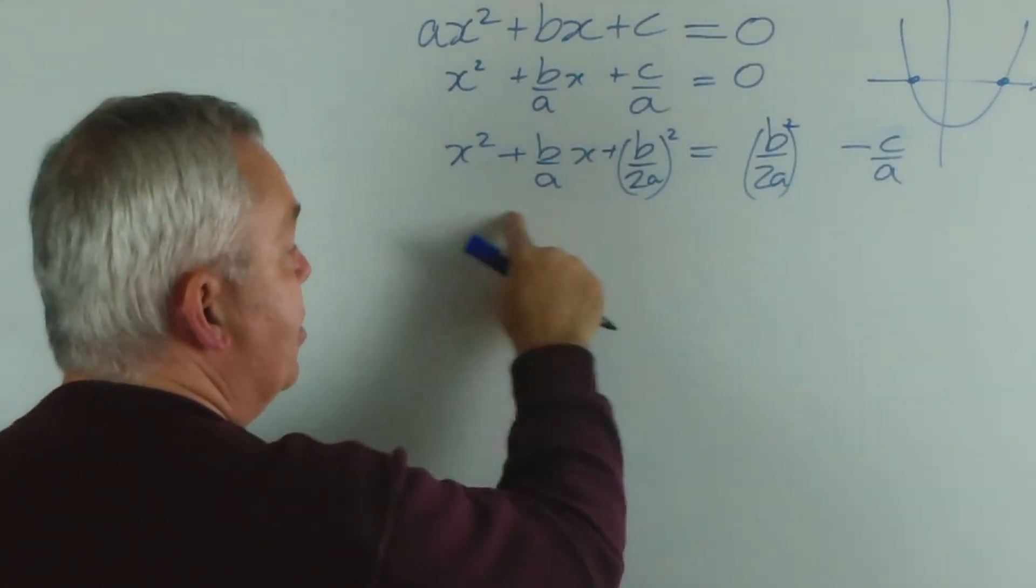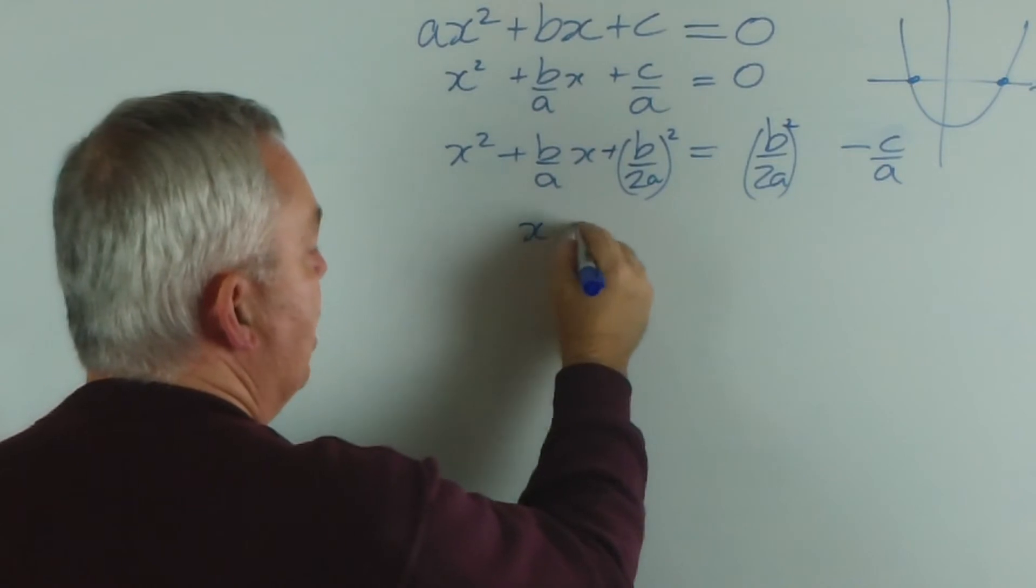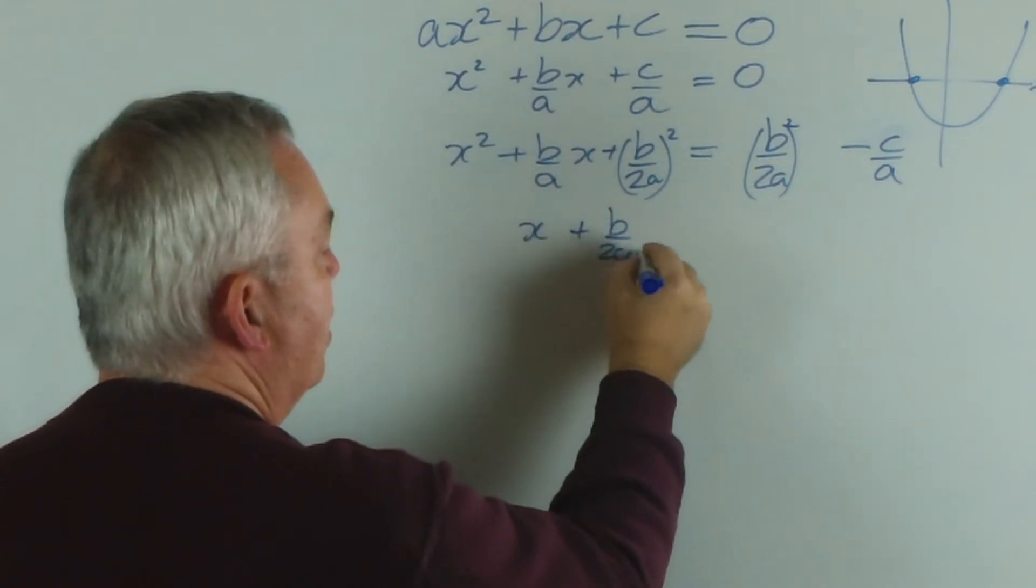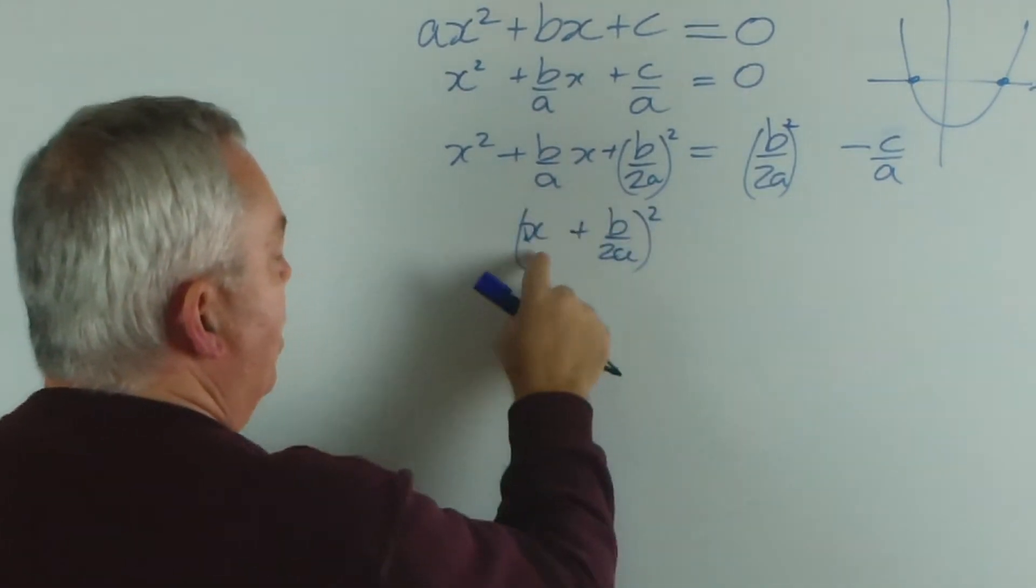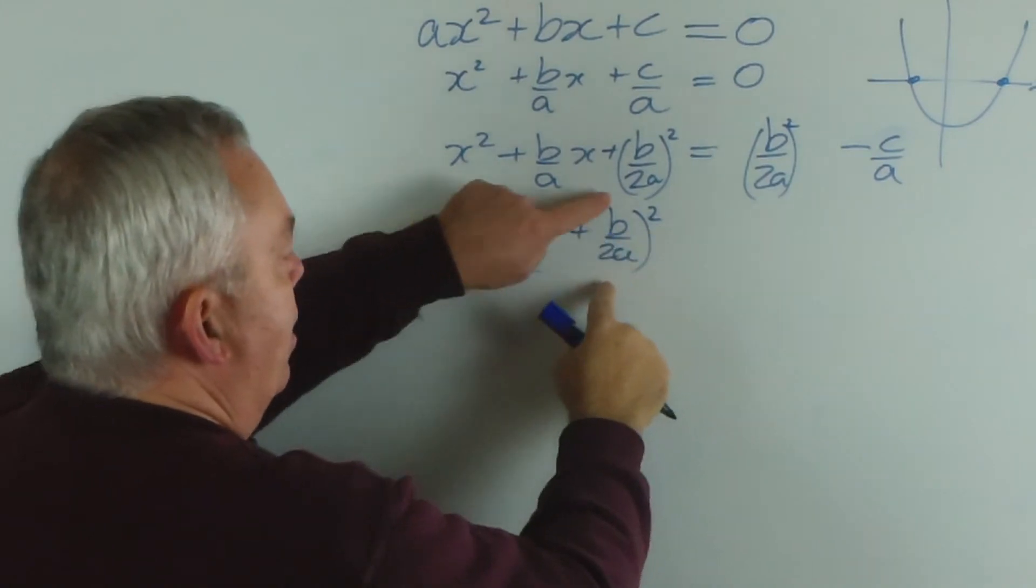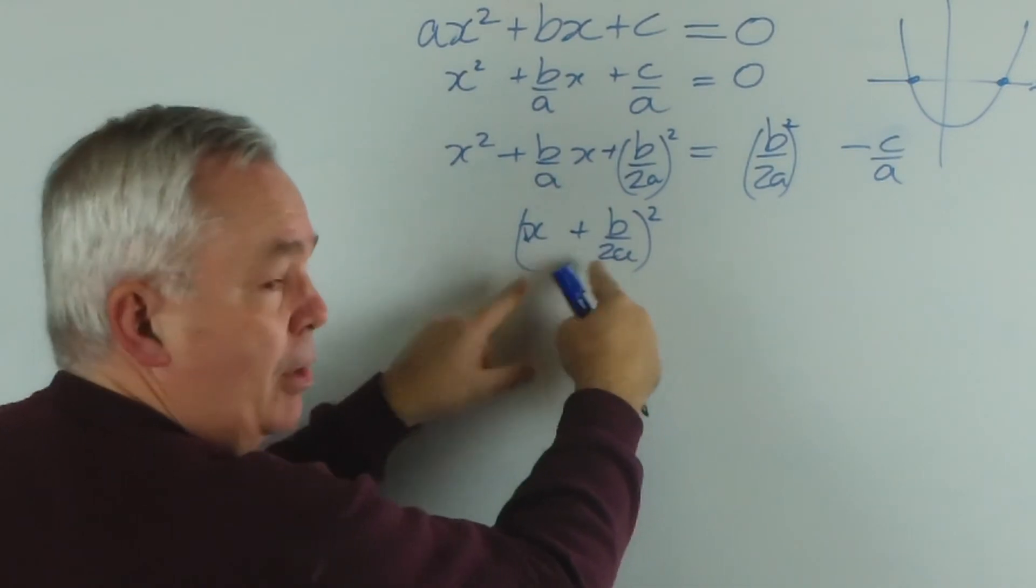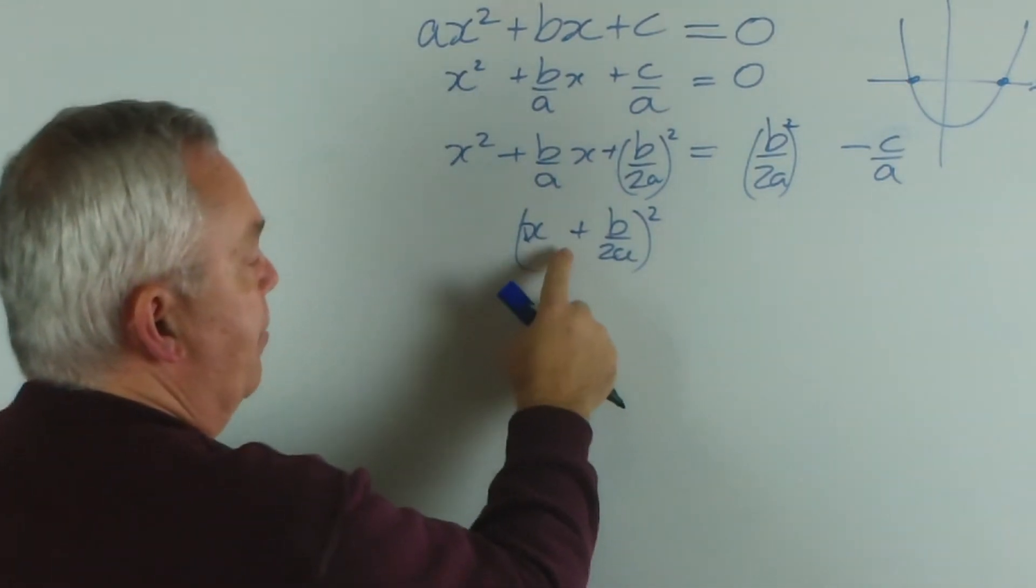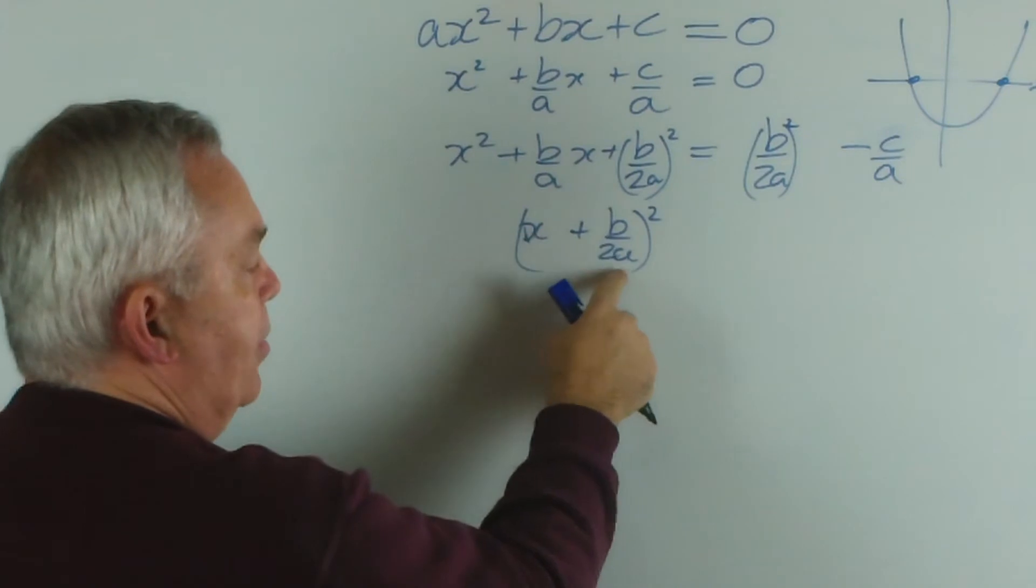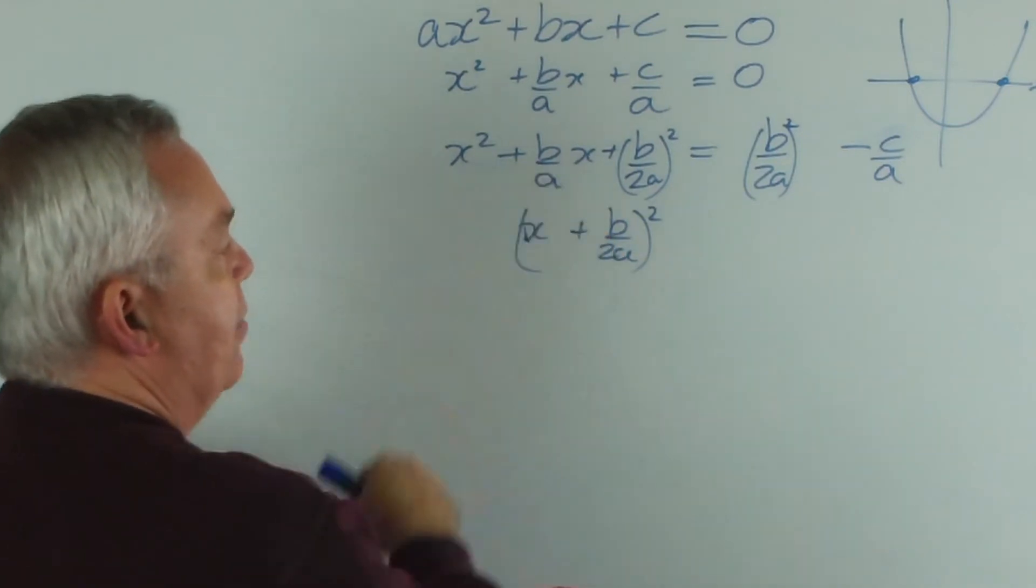This, of course, since we've completed the square, is x plus b on 2a all-squared. There's our x-squared, there's our b on 2a-squared, and the middle term would be twice the product. The product, of course, is bx over 2a, and double it is bx over a.